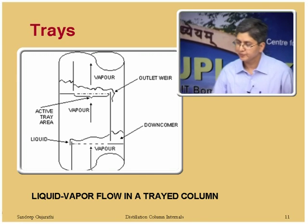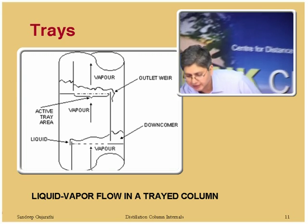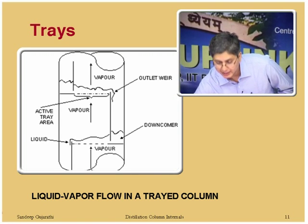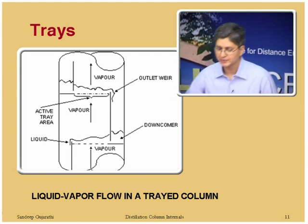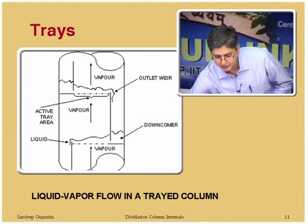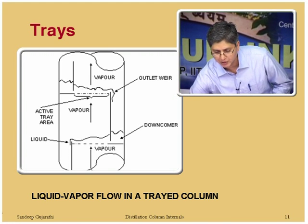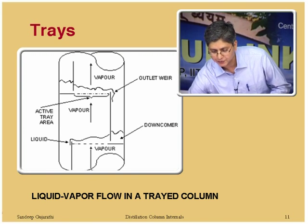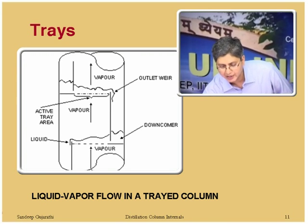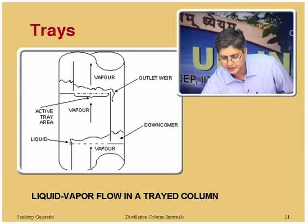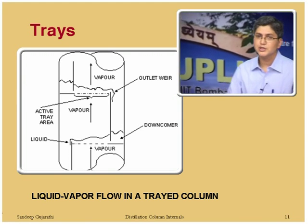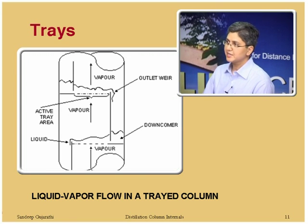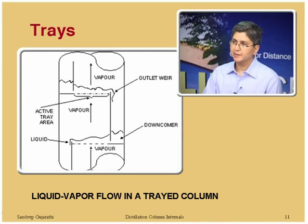The downcomer will hold some liquid to ensure that vapor from the tray below does not enter the downcomer, since the downcomer is where vapor-liquid disengagement should take place. When vapor flows from the tray below to the tray above, froth is generated on the tray, and a majority of clear liquid along with some froth enters the downcomer. The downcomer must provide sufficient residence volume and time to allow vapor-liquid disengagement.